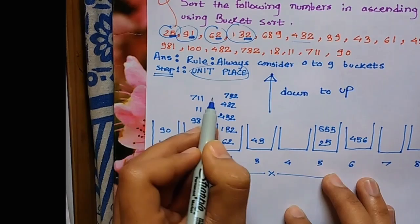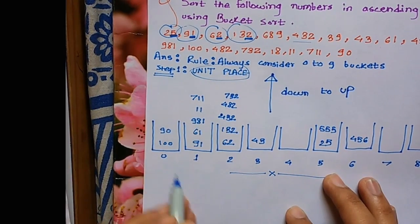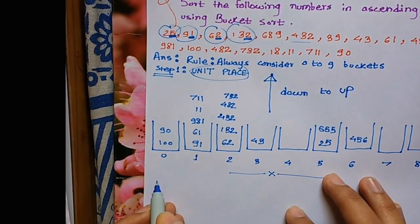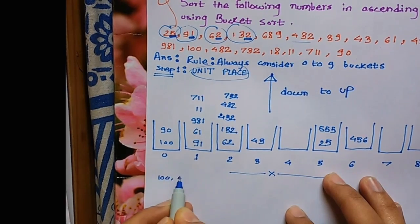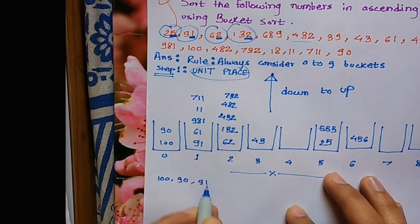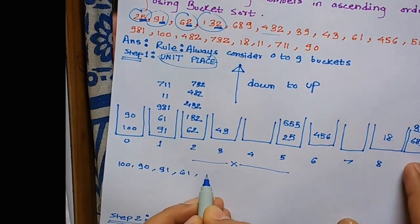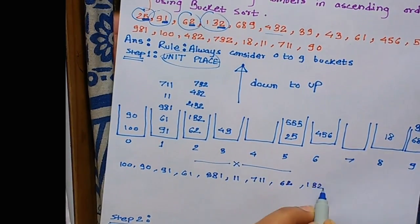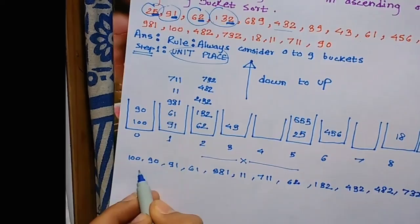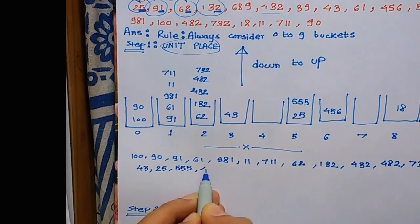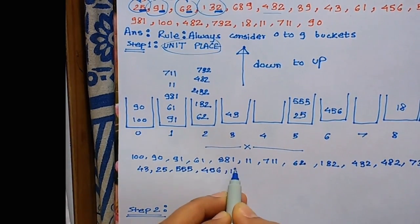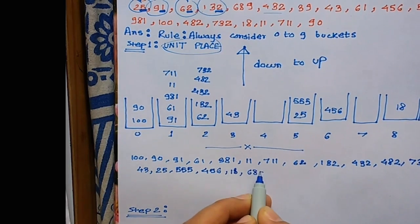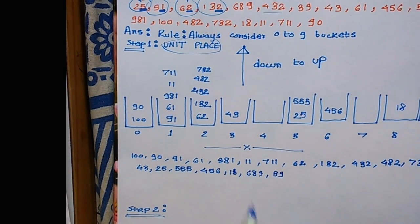From going down to up, we write: 100, 90, 91, 91, 61, 56, 18, 68, 689, 39.